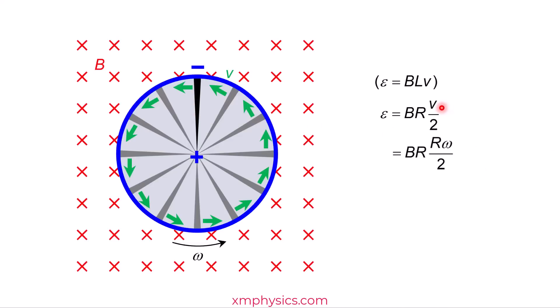So V, we can write it as R omega. Because this is the linear speed, this is the angular velocity. You learn V equals R omega in the topic of circular motion. As for omega, we can write it as 2π frequency. So the 2 and the 2 can cancel off. Do you see a πR² here?